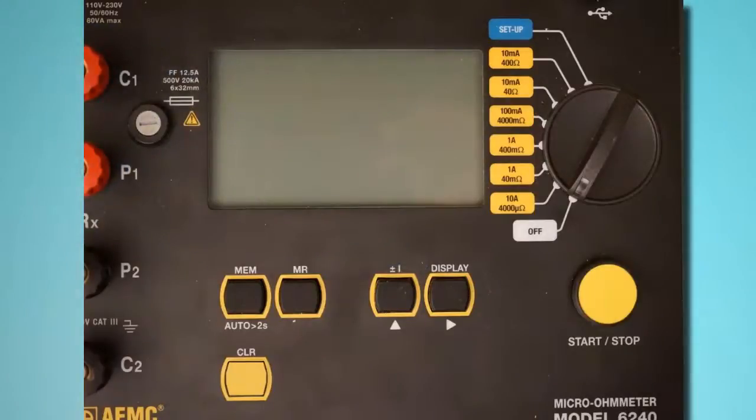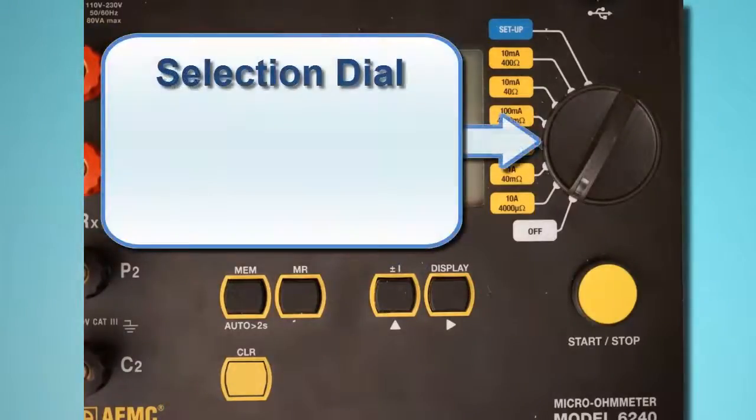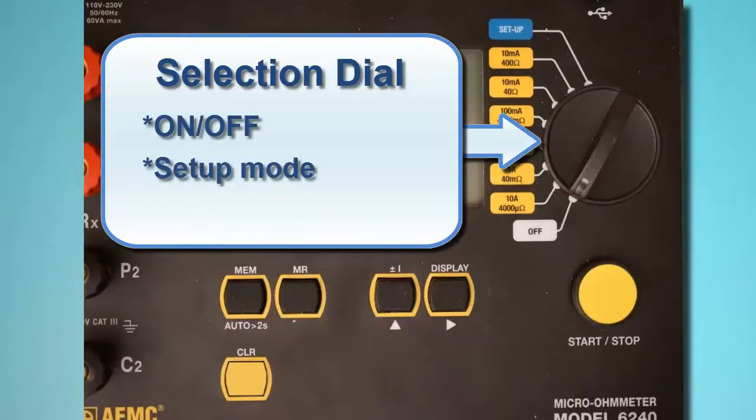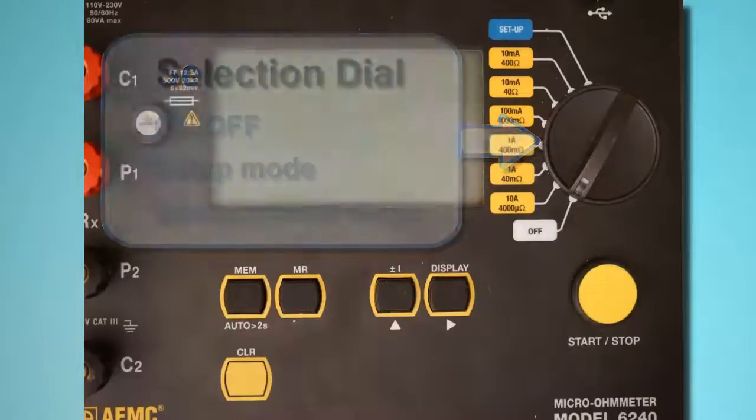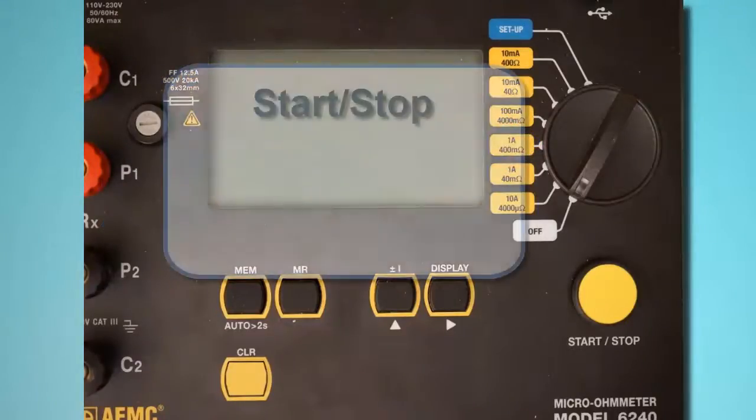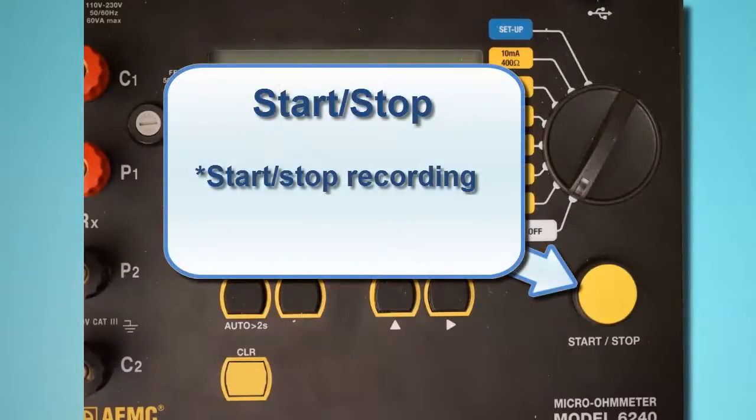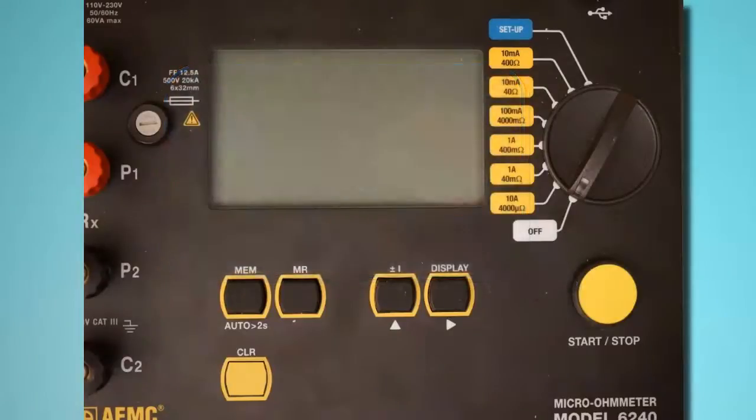To the right of the LCD is the instrument selection dial. This dial turns the instrument on and off, places the instrument in setup mode, and selects the test current resistance and current range. Below the dial is the Start-Stop button for starting and pausing test measurement sessions. The Model 6240 interface is described in detail in the user manual that accompanies the instrument.